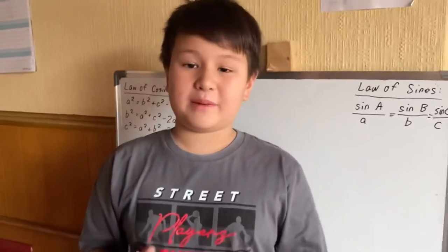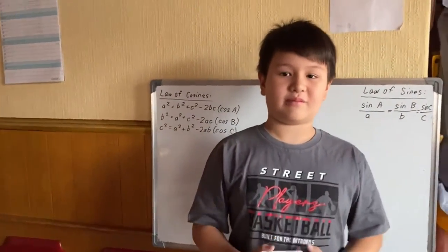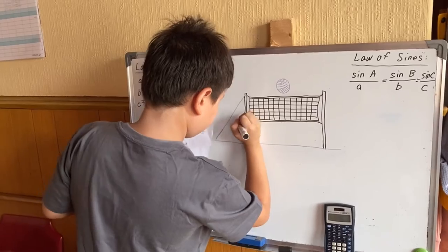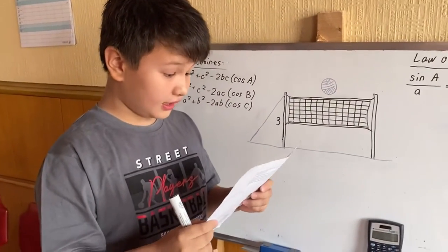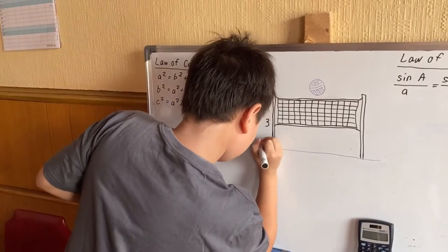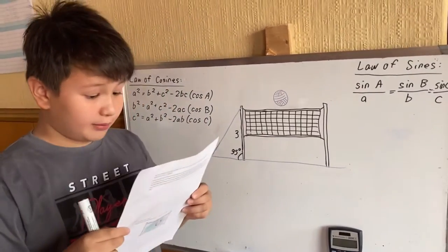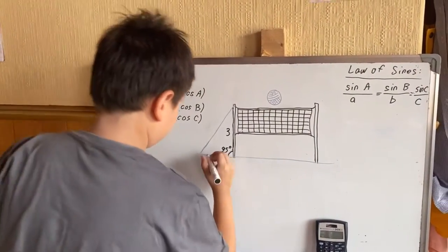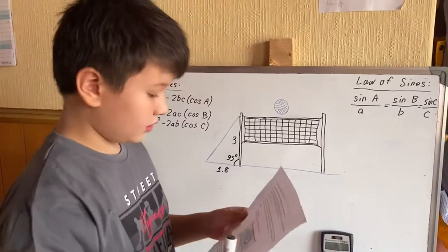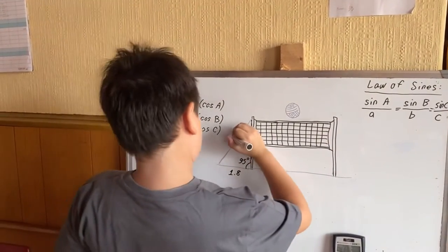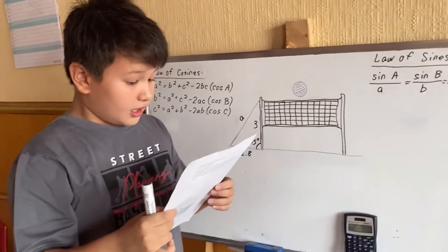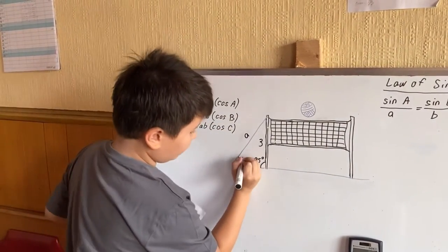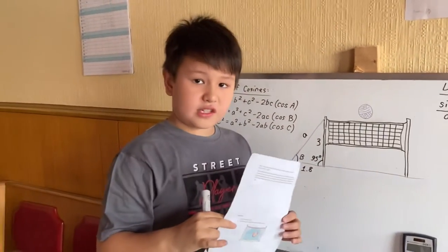Does it look intimidating? Don't be, my friend. Let's translate the formula by inserting all of the values into it. The pole is 3 meters tall and the angle between the pole and the ground is 95 degrees. A rope is attached to the top of the pole and extends to the ground, with a distance of 1.8 meters between the pole and the rope's extension on the ground. Our first task is to find the length of the rope, which I'll call A. Our second task is to find the angle made between the rope and the ground, which I'll call B. Now let's plug the numbers into the formula and solve the equation.